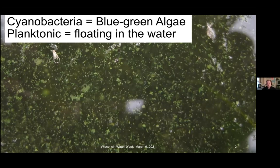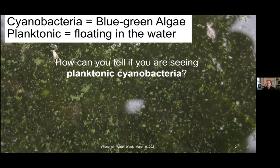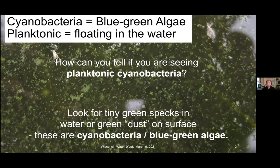One of the best things you can do to protect yourself and your family from the harmful effects of cyanobacteria is to learn to recognize them. If you're looking at lake water — here's a close-up — how can you tell if you're seeing planktonic cyanobacteria? You look for little tiny green specks in the water, or a green dust on the surface. That's cyanobacteria, otherwise known as blue-green algae. They tend to be a mint green color when actively growing.